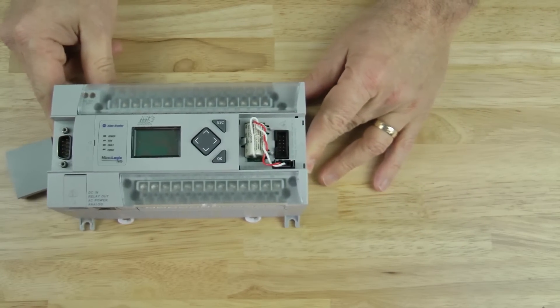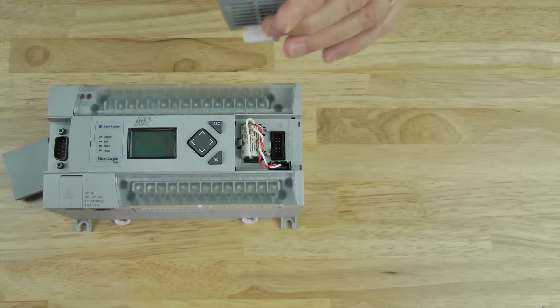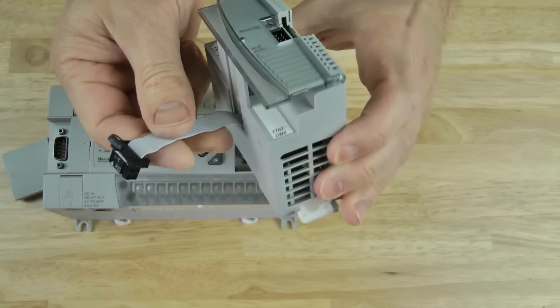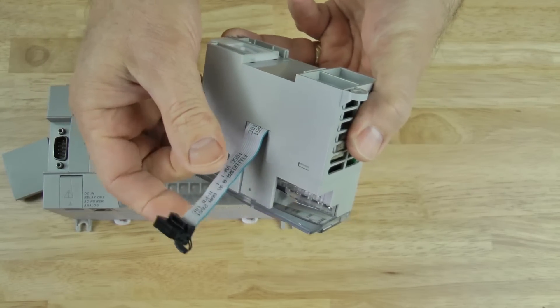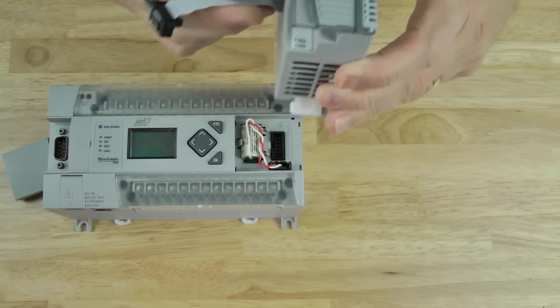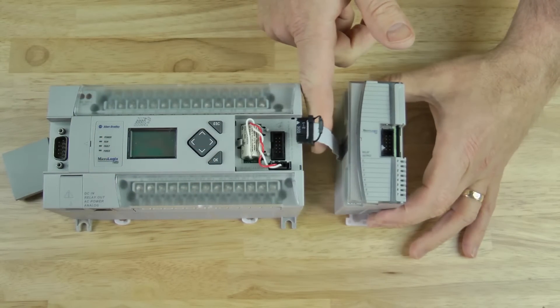Now let's take a look at the expansion I.O. module itself. You can see here a ribbon cable on the left hand side with a connector at the end. To connect this 1762 expansion I.O. module to the MicroLogix 1400...